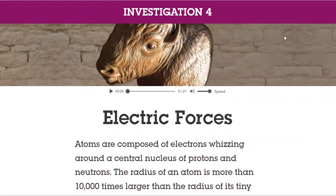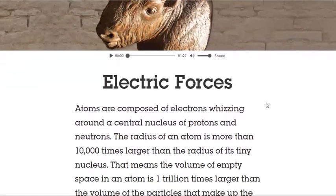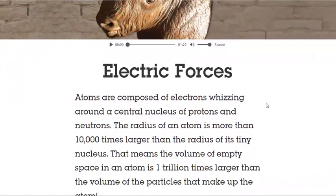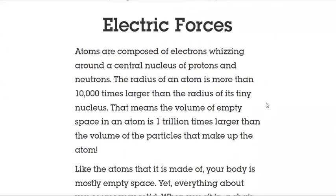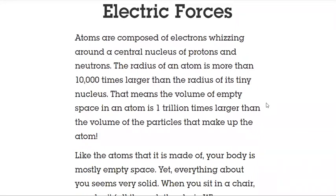Atoms are composed of electrons whizzing around a central nucleus of protons and neutrons. The radius of an atom is more than 10,000 times larger than the radius of its tiny nucleus. That means that the volume of empty space in an atom is one trillion times larger than the volume of particles that make up atoms.